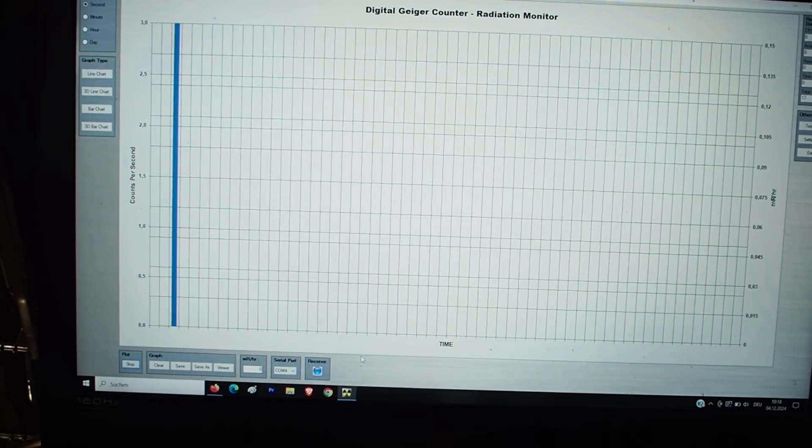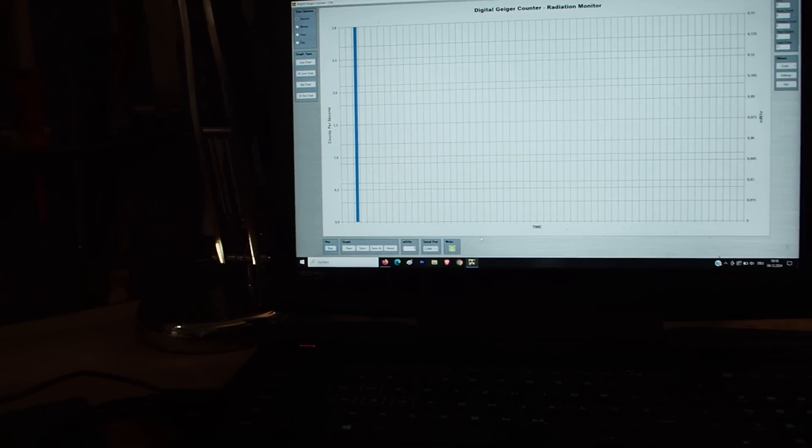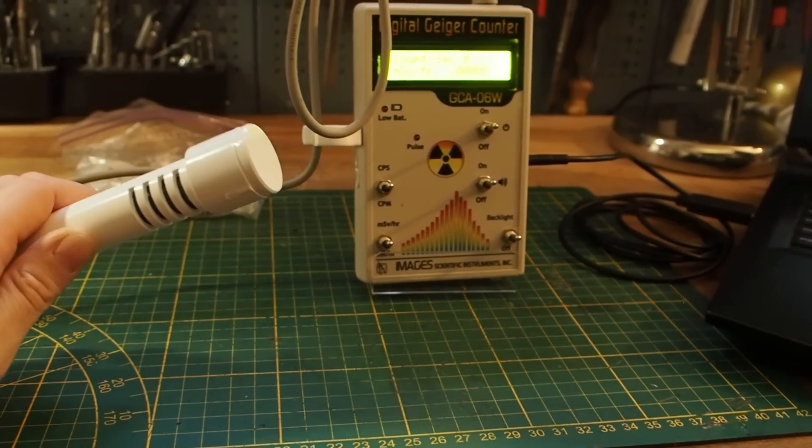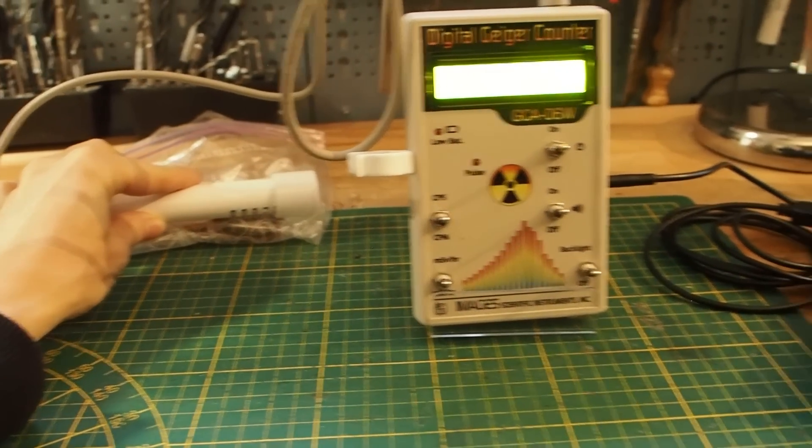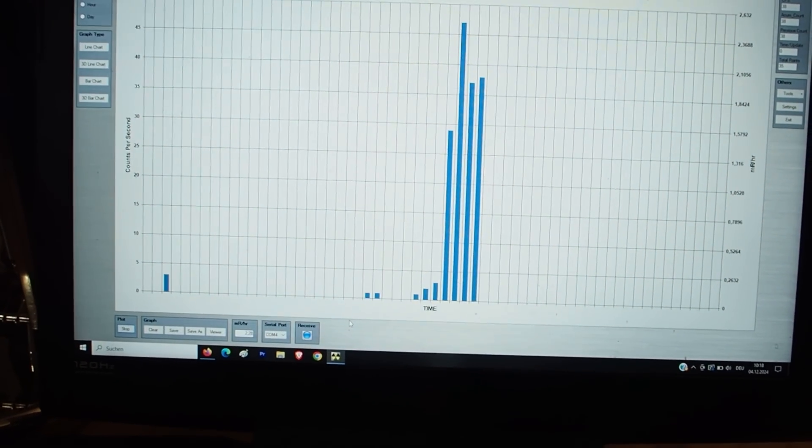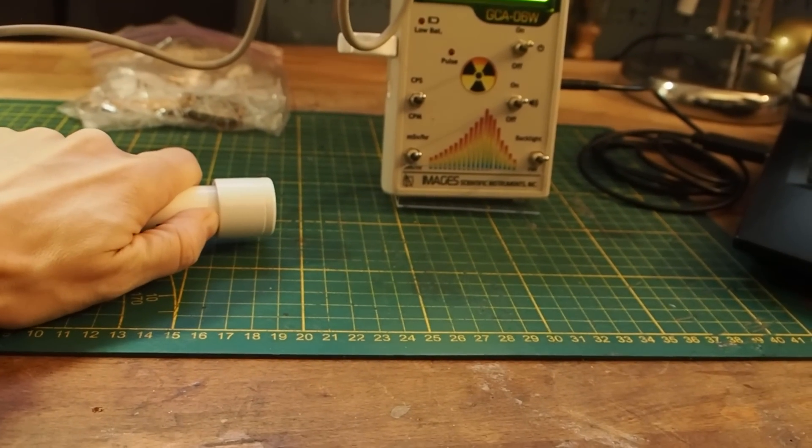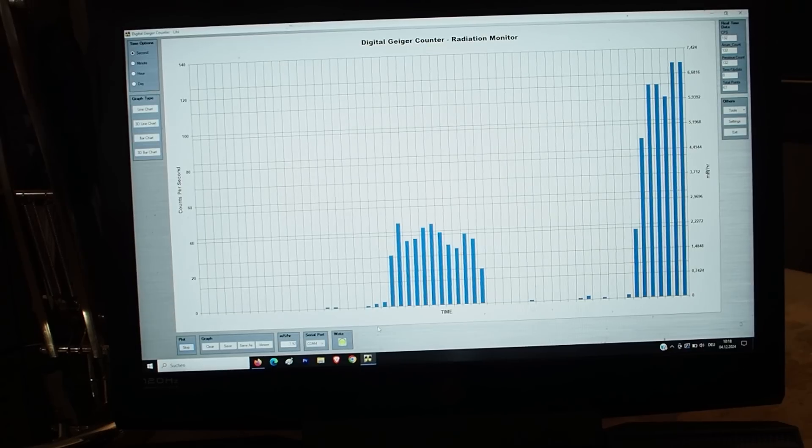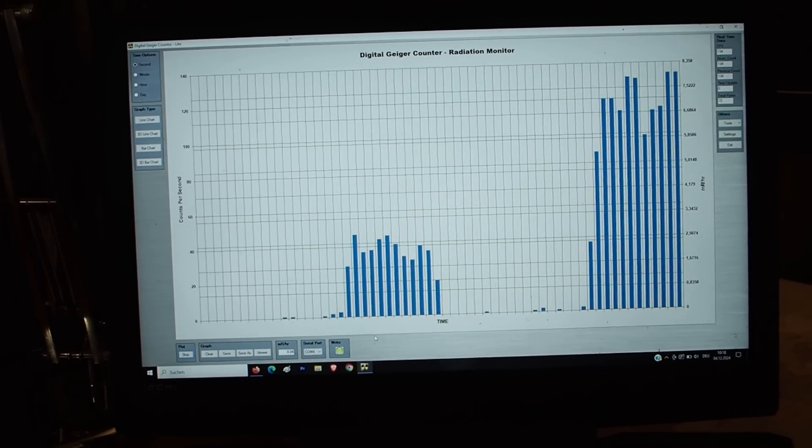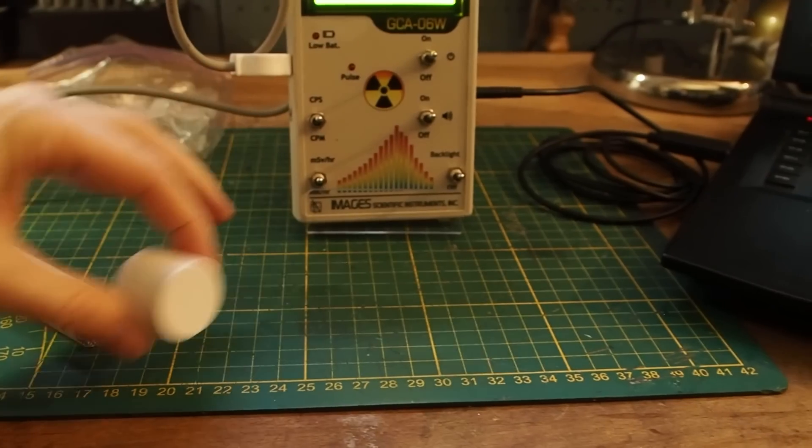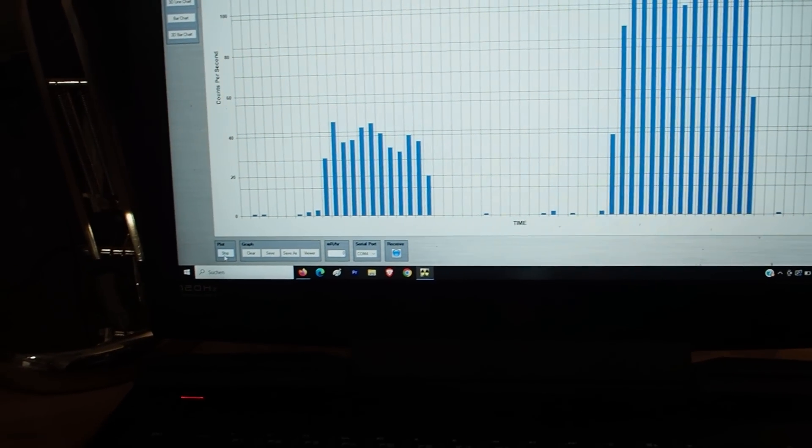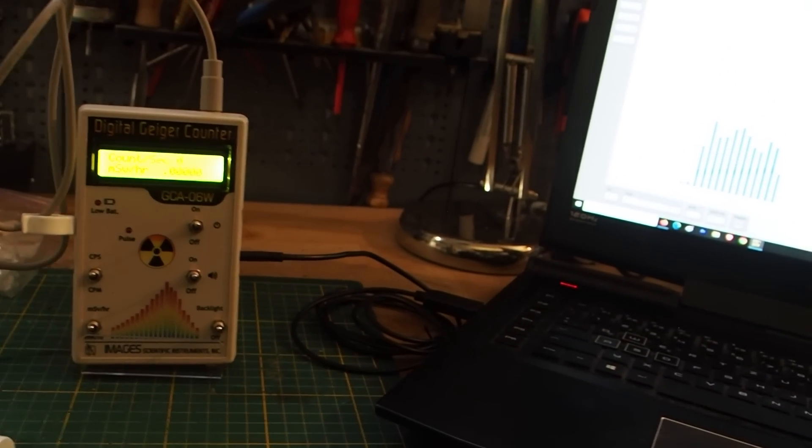Alright so now I've connected the Geiger counter with this computer program digital Geiger counter lite and now I want to see if we can get some readings on the computer as well. So first we are going to detect gamma and beta radiation through the side window here. Okay so now I take it off. You can see that it's reacting really fast. Then next I'm going to take off the end cap. Okay and now let's do another reading. Okay so here you can see the graph. Let's press stop.